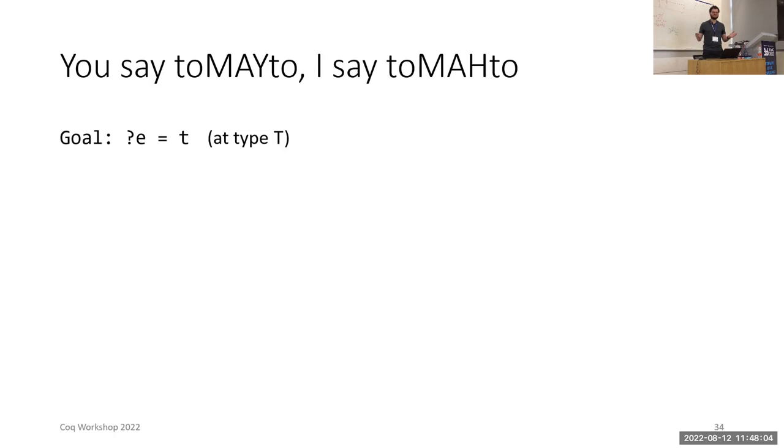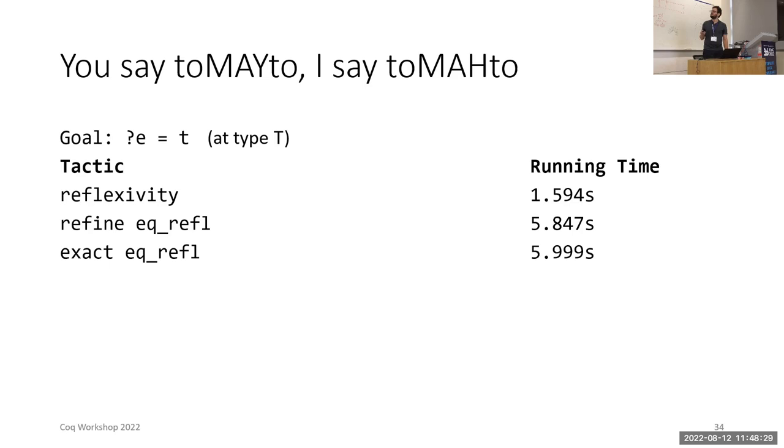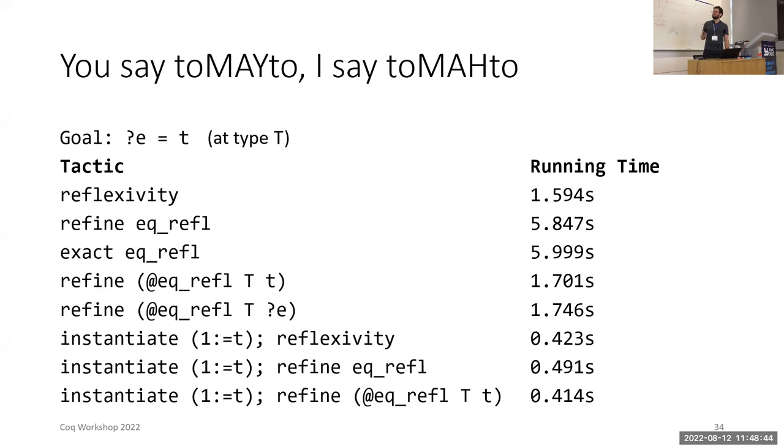There are 258 equalities that we have to prove for the loop body, and 97% of them are of the particularly simple form evar equals some term that is evar-free. If we compare the running time for some tactics across all of the 97 simple equalities, reflexivity takes about 1.6 seconds to do all of them. Refine e-greple takes about 6 seconds. Something suspicious is going on here. If we give the arguments to e-greple fully, that drops down to 1.7 seconds. Something is going on with the implicit arguments. If we instantiate the evar ahead of time giving the term exactly, we get a 4x speedup over reflexivity.